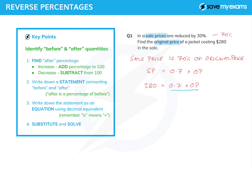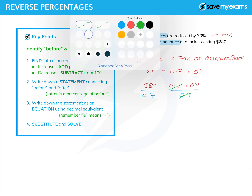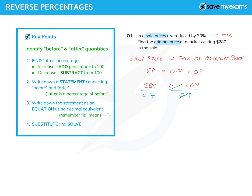We want the original price on its own, so we divide both sides by 0.7. The 0.7s on the right cancel, and we get original price = 280 ÷ 0.7, which is $400 — very expensive for a jacket!